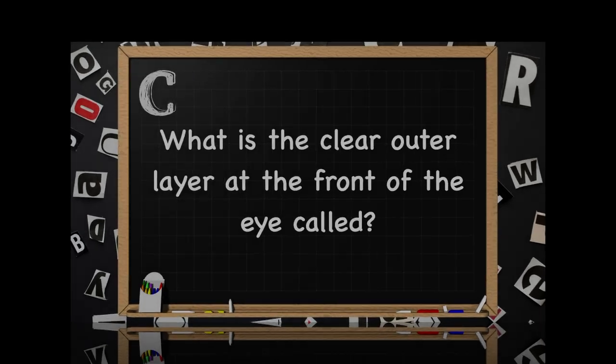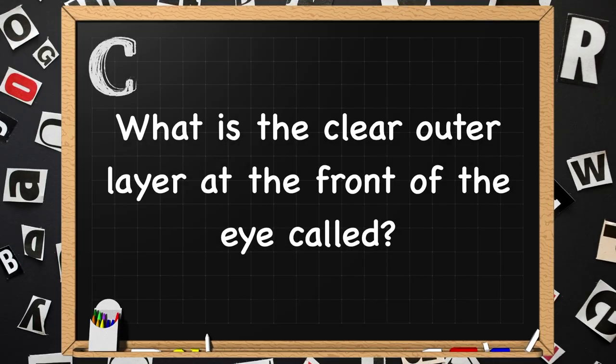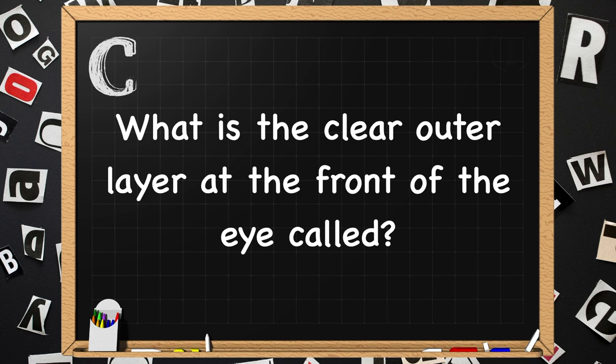Beginning with C. What is the clear outer layer at the front of the eye called? The answer is Cornea.